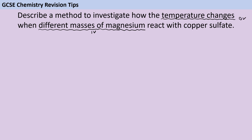You can't measure temperature change directly, so what we need to do is take the end temperature and subtract the starting temperature to see what the difference between those two numbers is. For control variables, I'm going to want to talk about the volume and the concentration of the copper sulphate solution. You could also get into the idea of the magnesium needing to have the same surface area — so if you're using powder, you're always using the same kind of powder, or if you're using magnesium ribbon, it's always the same diameter of ribbon.